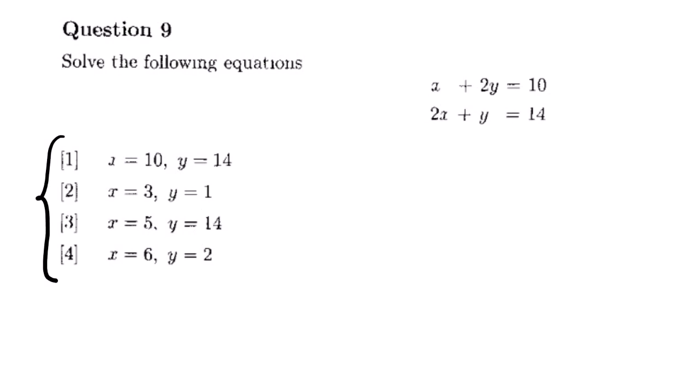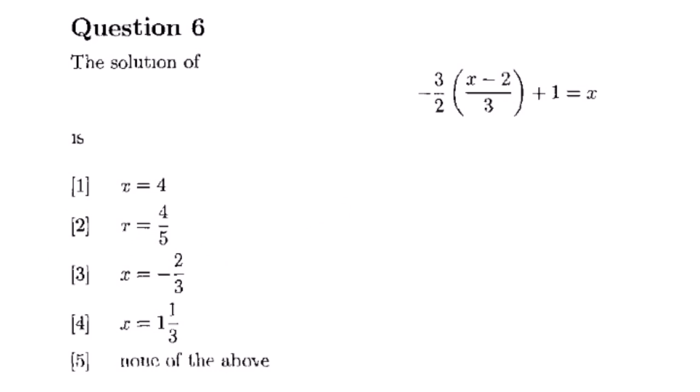Our solution is x equals 6 and y equals 2, which corresponds to option 4. Our next question is question 6. We are given the equation: negative 3 over 2, bracket x minus 2 times 2 over 3, close bracket, plus 1 equals x. We are solving for x.